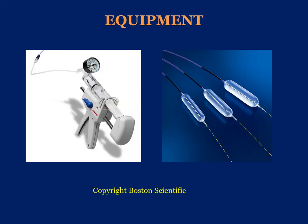We use both disposable equipment — balloon and wire — as well as a balloon insufflating device. There is a gauge on the device that indicates the number of atmospheres, and typically on the packaging of the balloon you would see the diameter size and which pressure you need to apply through the device to achieve that diameter.